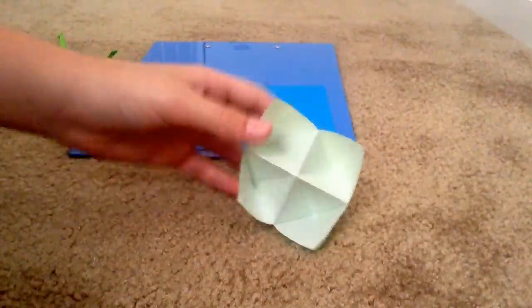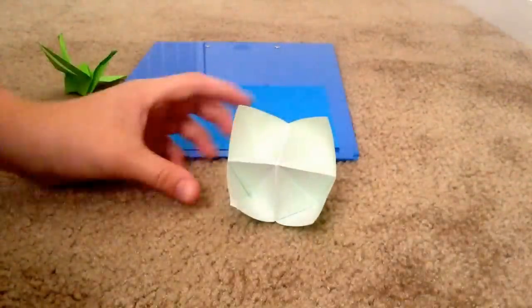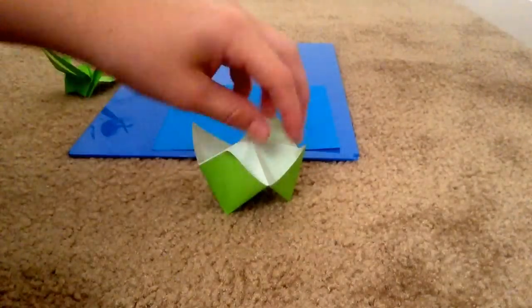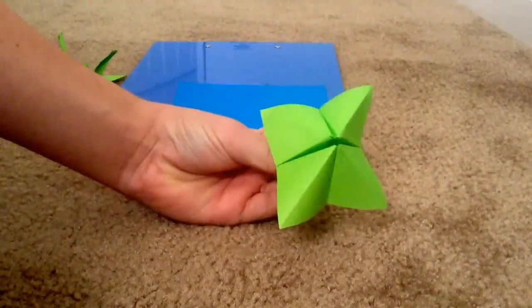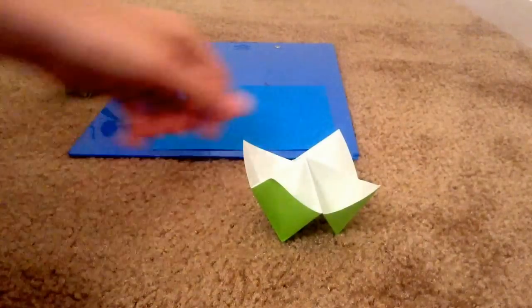It's something that you can hold little things inside of. If you know how to make a cootie catcher, it's just upside down. Let's get started.